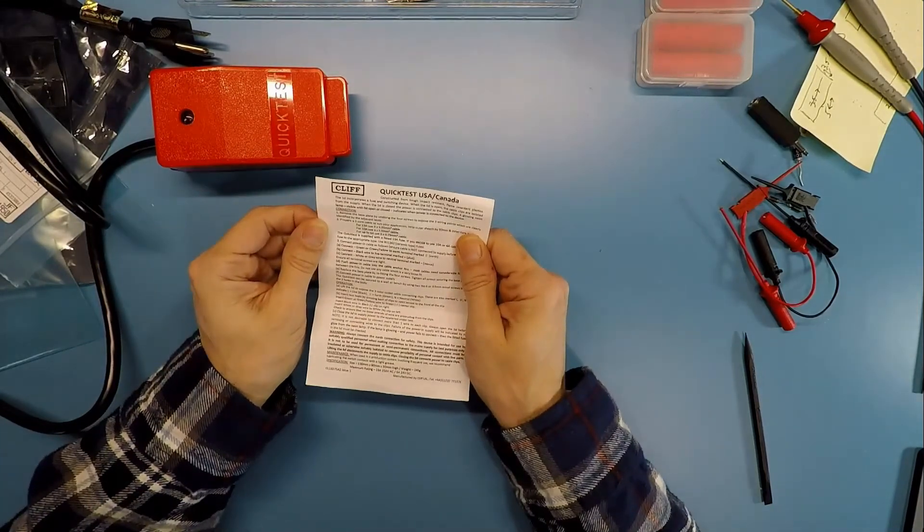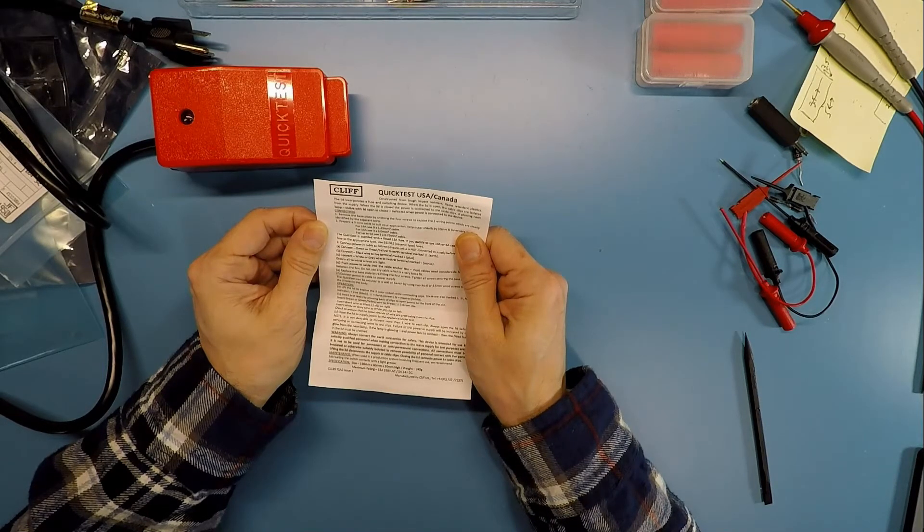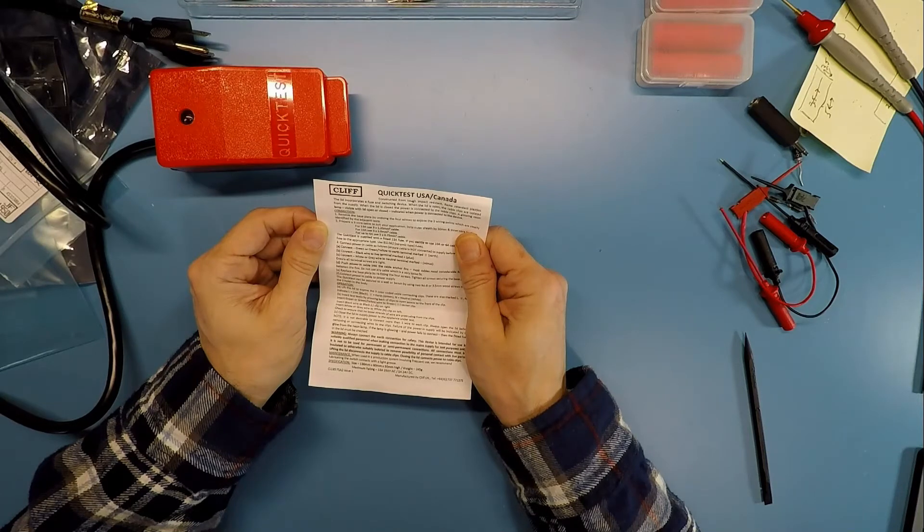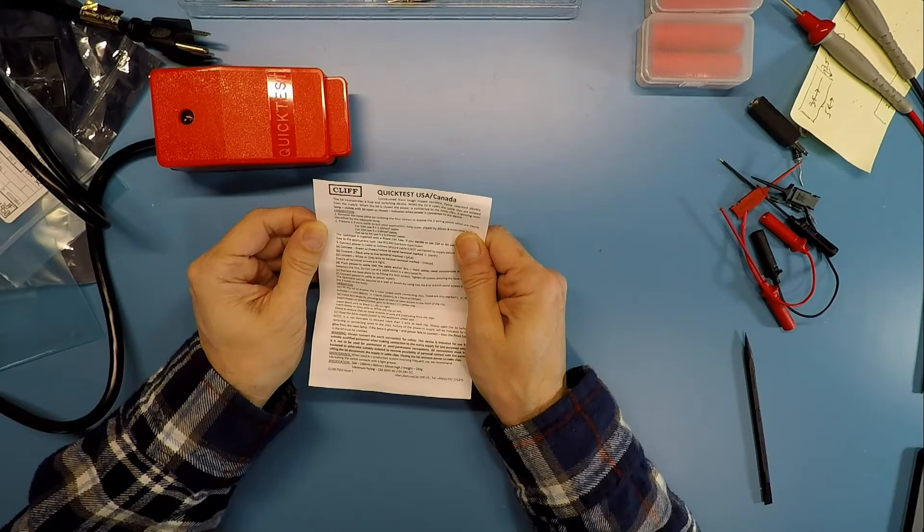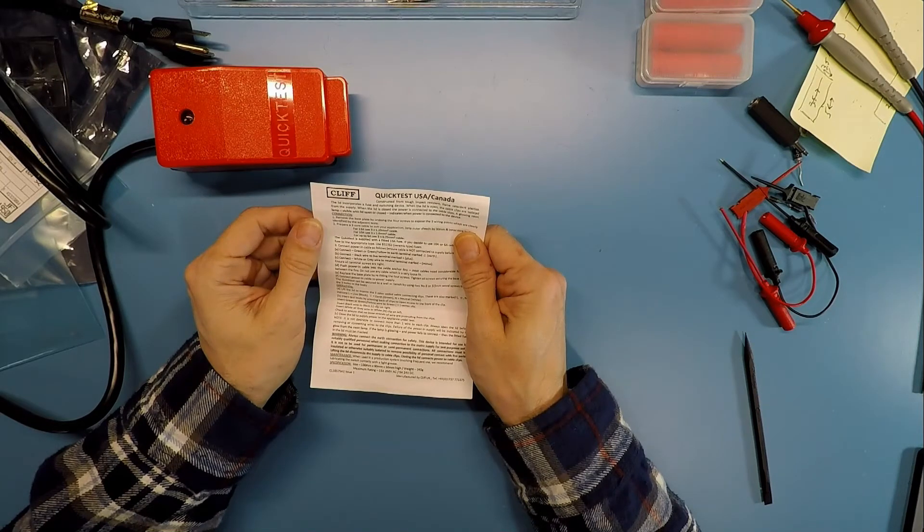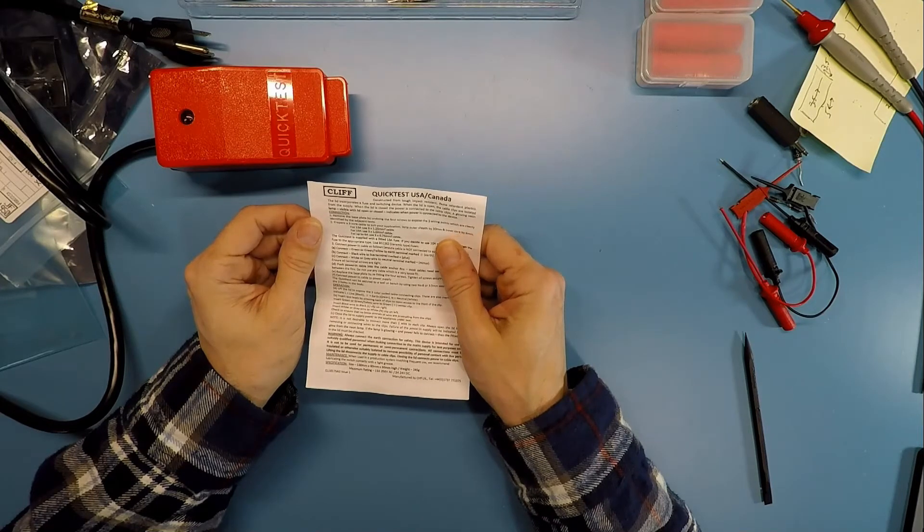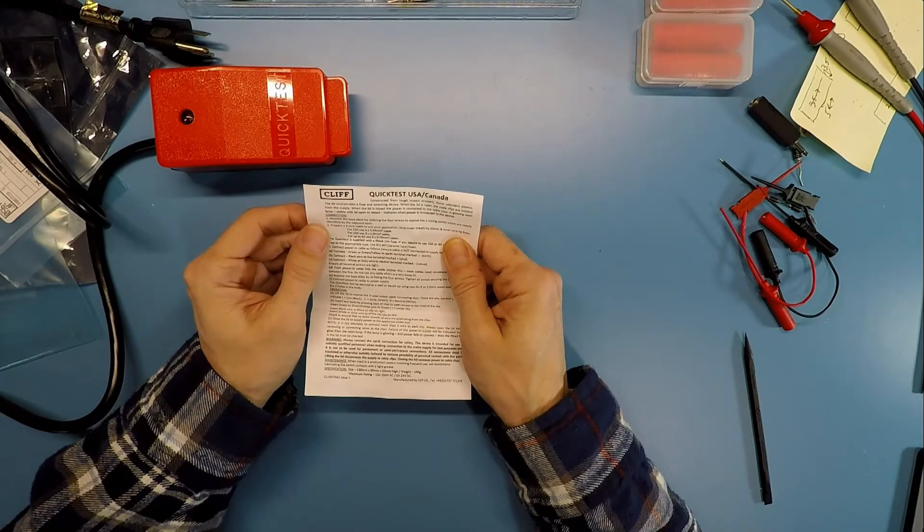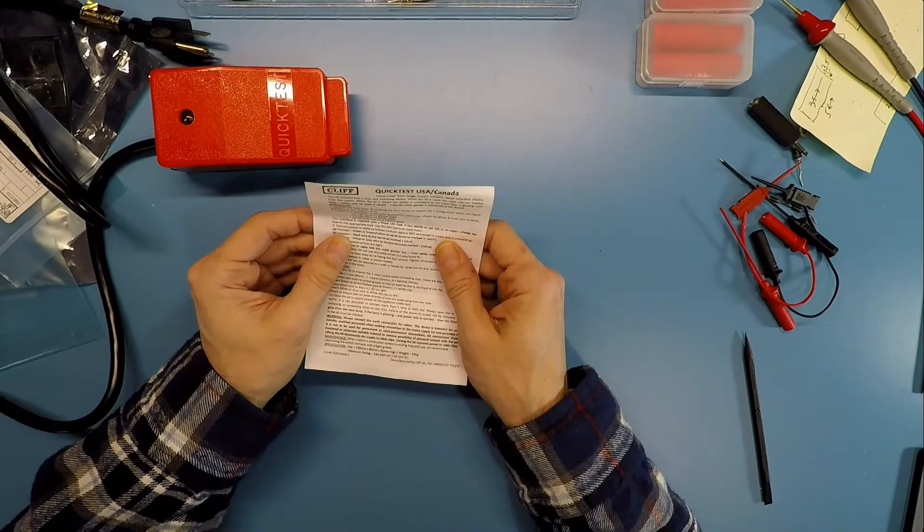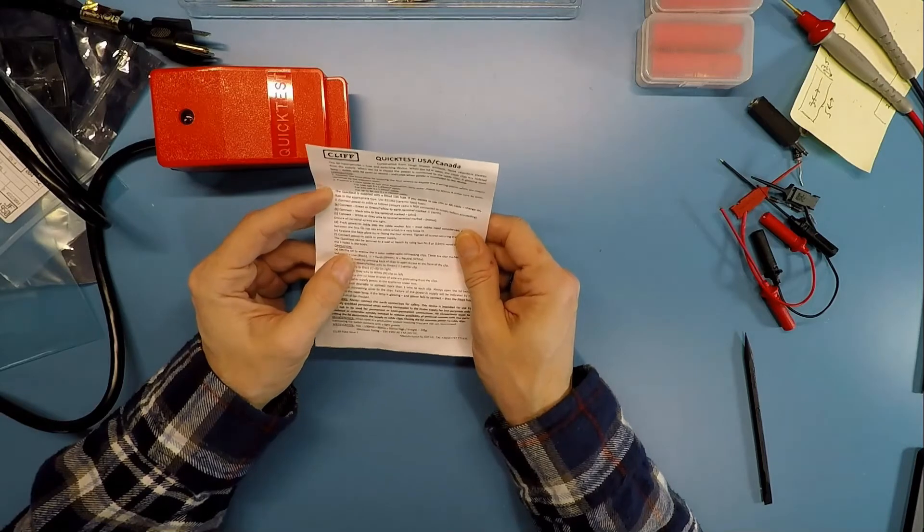Reading the instructions: the lid incorporates a fuse switch device. When the lid is open, the cable clips are isolated from the supply. When closed, power is connected to the cable clips. The glowing neon lamp, visible with lid open or closed, indicates power is connected. It explains to prepare a 3-core cable by stripping outer sheath about 30 millimeters and inner core about 6 millimeters, and recommends different fuses for different cable gauges and amperages.